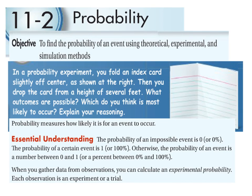Hello, today we're going to be looking at probability problems. We want to be able to find the probability of an event using theoretical, experimental, and simulation methods. Here we are presented with a problem concerning probability of taking an index card, folding it partway down one side slightly off center, and dropping the card from a height of several feet. Thinking about what outcomes are possible, what do you think would be most likely to occur? There we're thinking about probability.